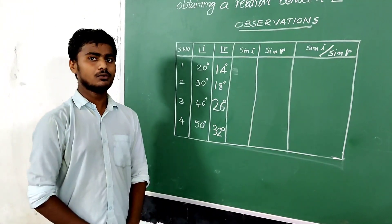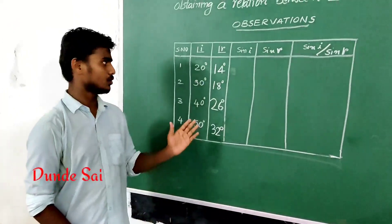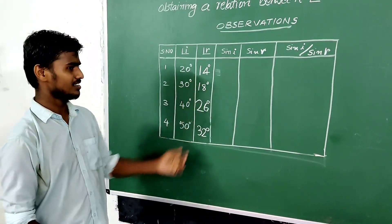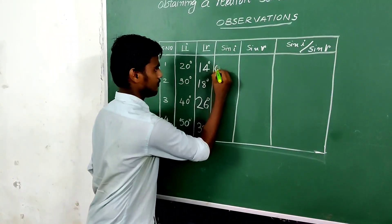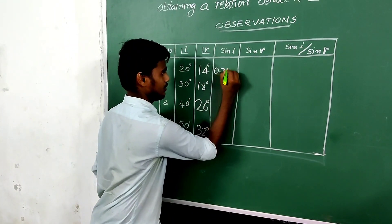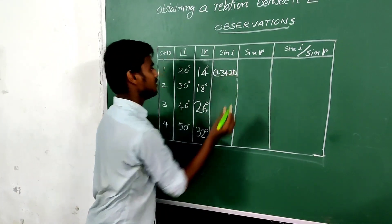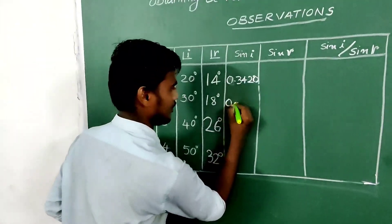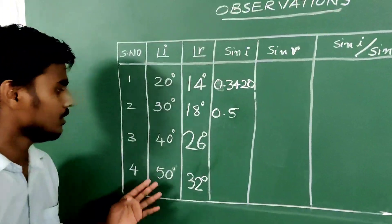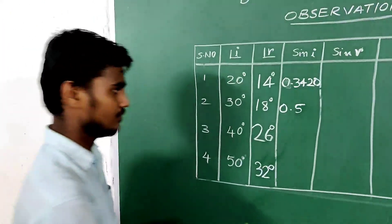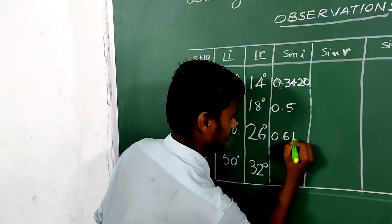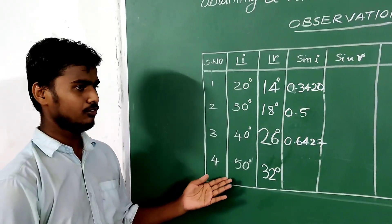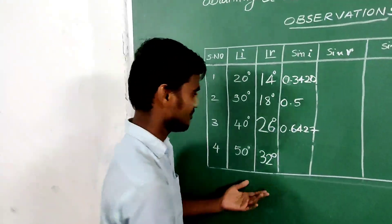From the calculator we calculated the sin i values. For sin i 20 degrees the sin i value is 0.3440. And sin i value for 30 degrees is 0.5. Sin i value for 40 degrees is 0.6437. And the sin i value for 50 degrees is 0.7660.